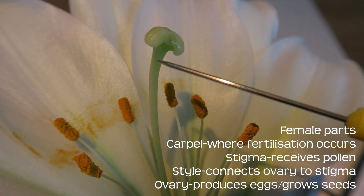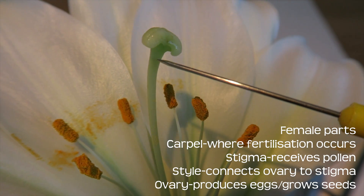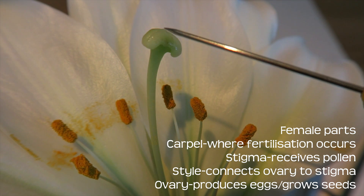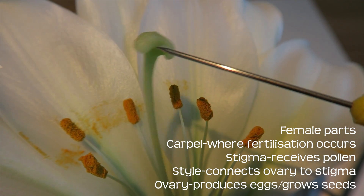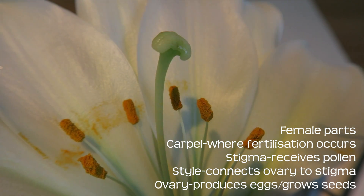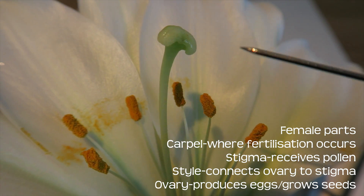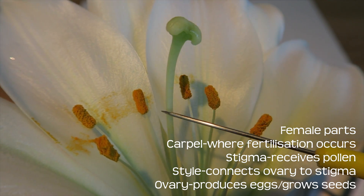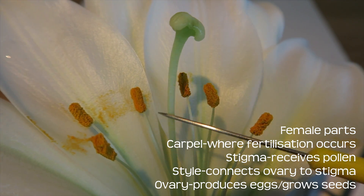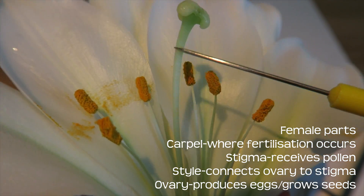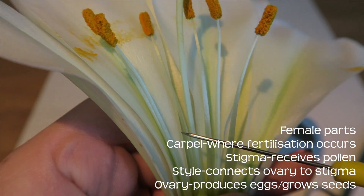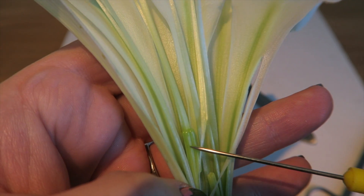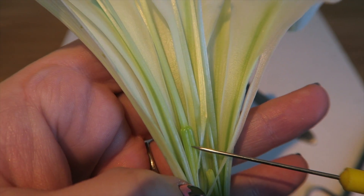Here we have the female parts. This is going to be the stigma, where the pollen is put onto — this receives the pollen. This is the style that connects the stigma to the ovary, which is down here.